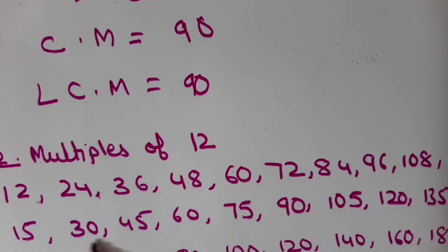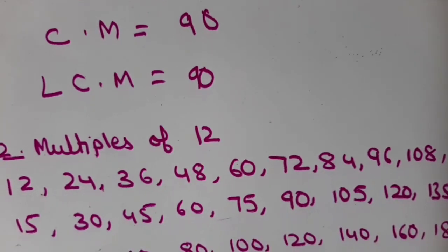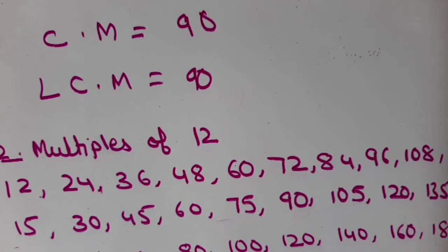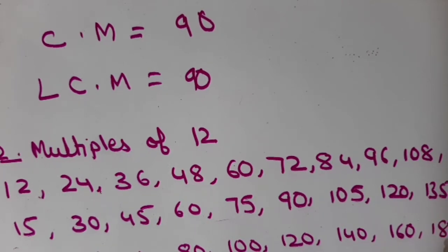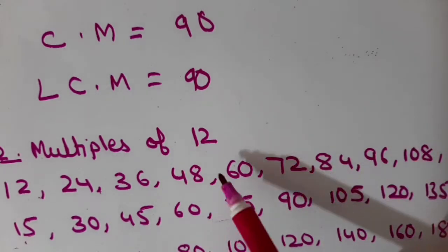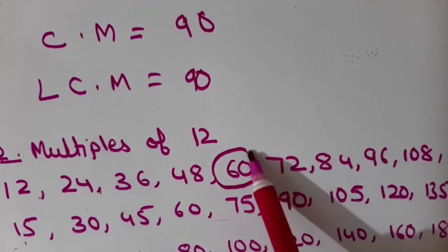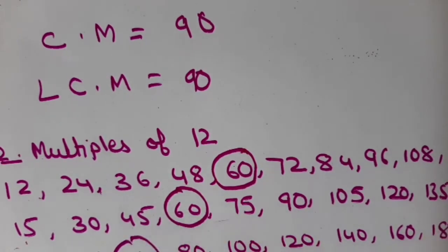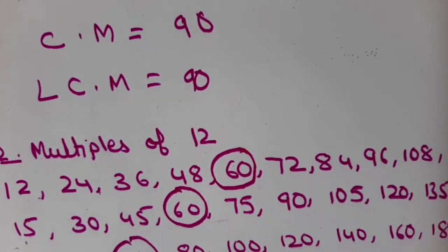I have written the first ten multiples of 15 and the first ten multiples of 20. Now I will find the common multiples — that should be common in all three: in 12, in 15, and in 20. You can see here 60. This 60 is common in all three. So the first common multiple is 60.